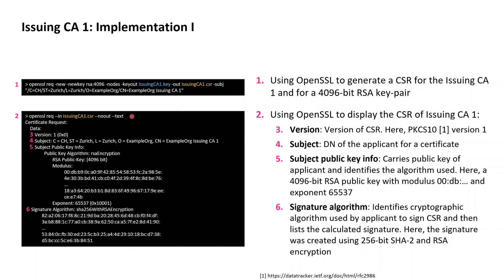We use OpenSSL to display the content of the CSR using the second command listed on the left. Field number 3 in the CSR is a version indicator, indicating CSR version 1, whose structure and syntax are defined in RFC 2986, known as PKCS#10. Field number 4 identifies the applying subject as a distinguished name, containing the subject information provided in the OpenSSL command. Field number 5 carries the public key of the applying subject — a 4096-bit RSA public key listed with its modulus and exponent.